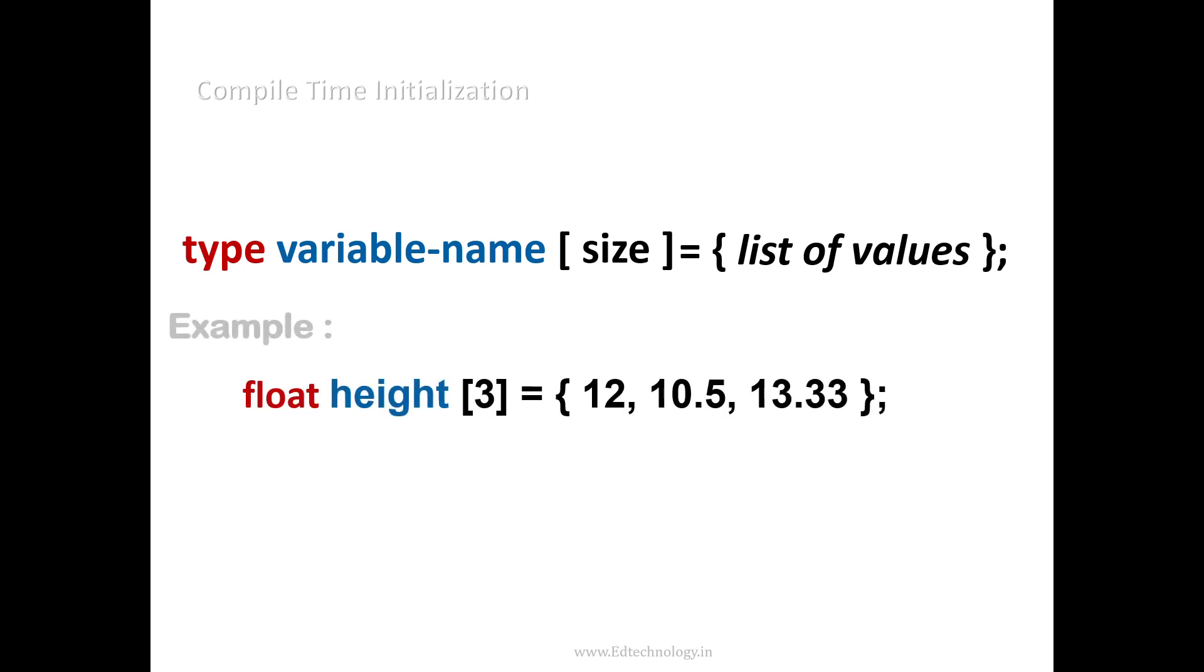So if you have heights of 3 students from the class, you can have float height, because the heights are normally in the floating point value, that is what we are used. So you can use float height and the size of 3 and store the values if you have the values right below before the program is executed.